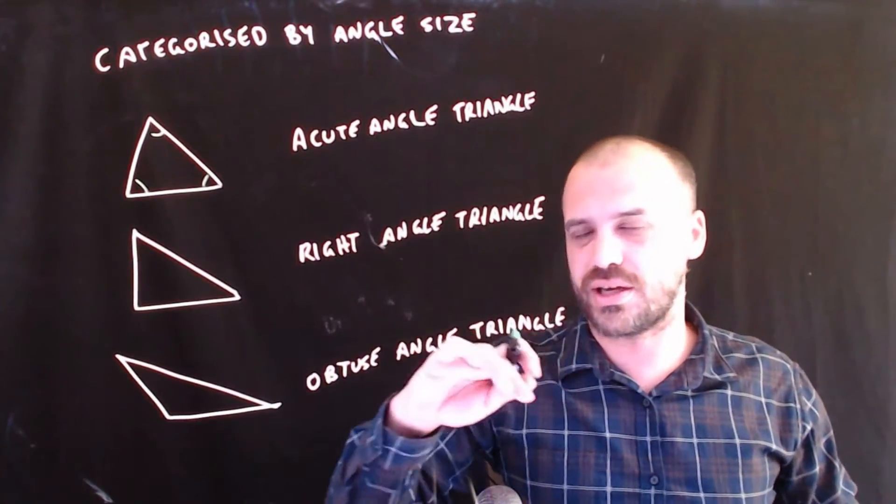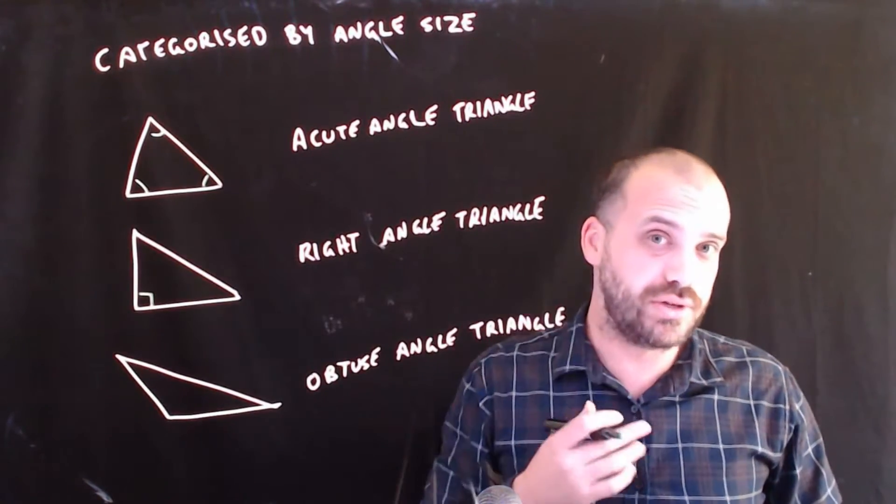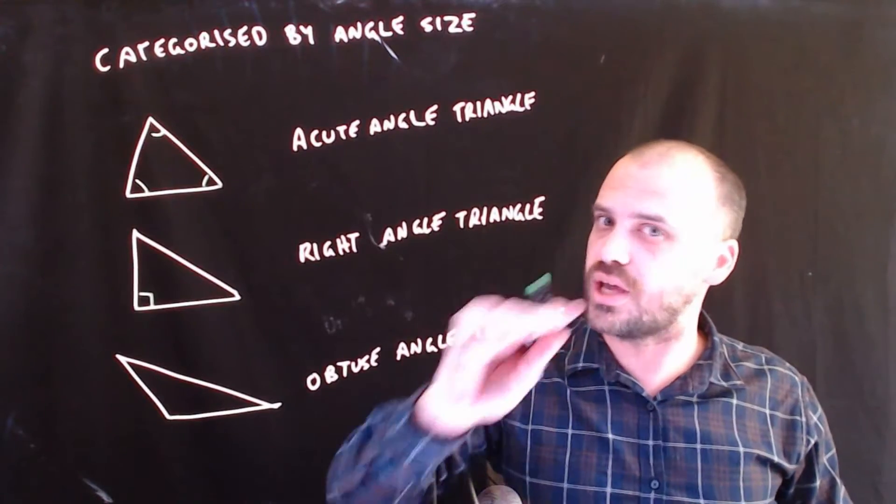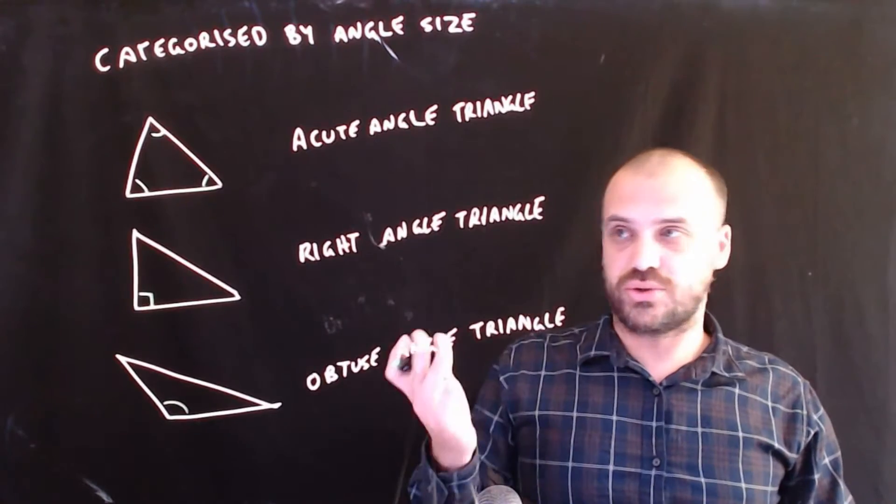This is called a right angle triangle because one of the angles is 90 degrees. Only one of them could be 90 degrees. And this is called an obtuse angle triangle because one of the angles, and only one of them, is obtuse.